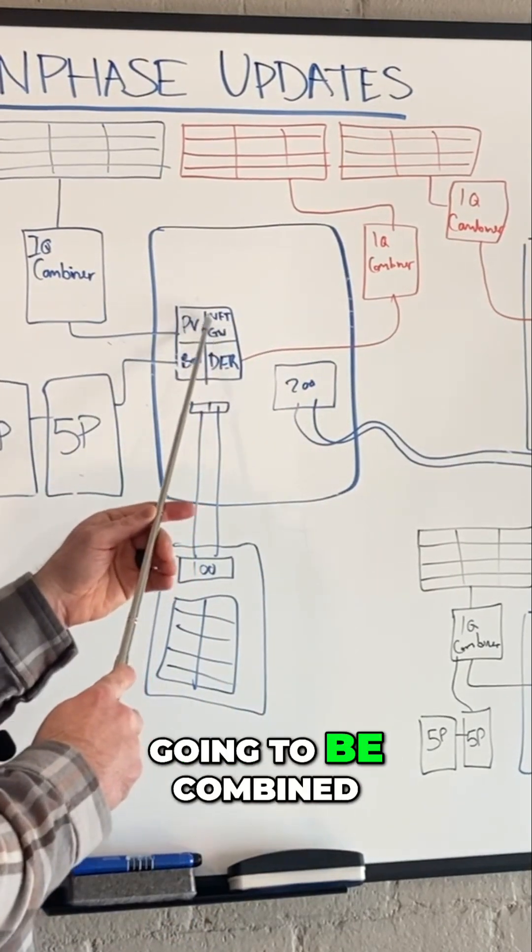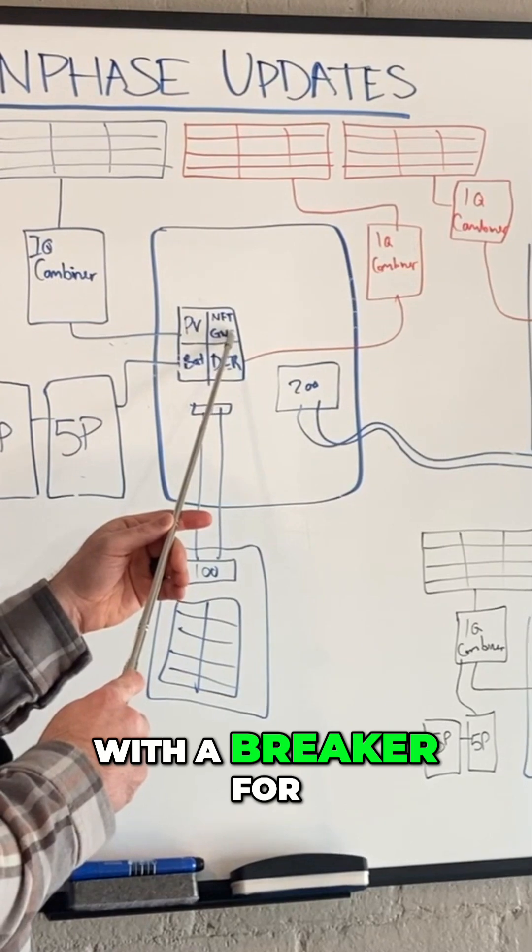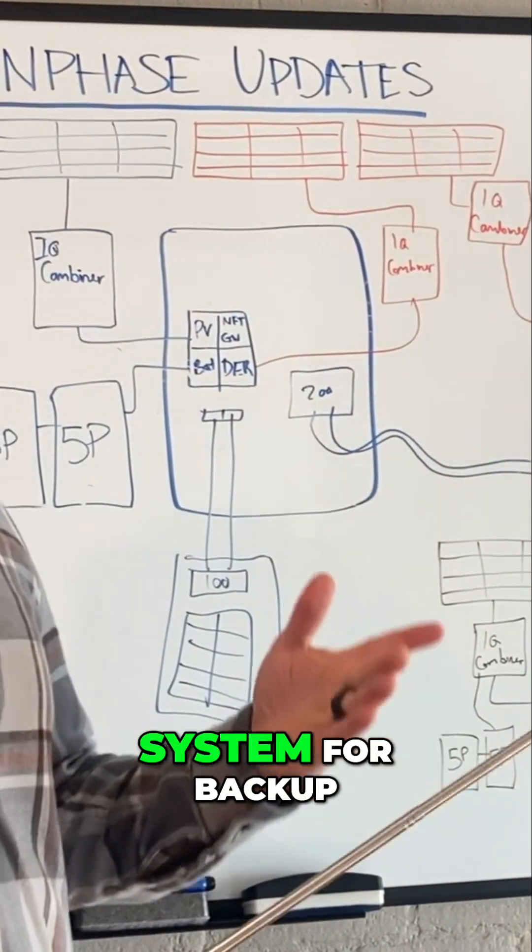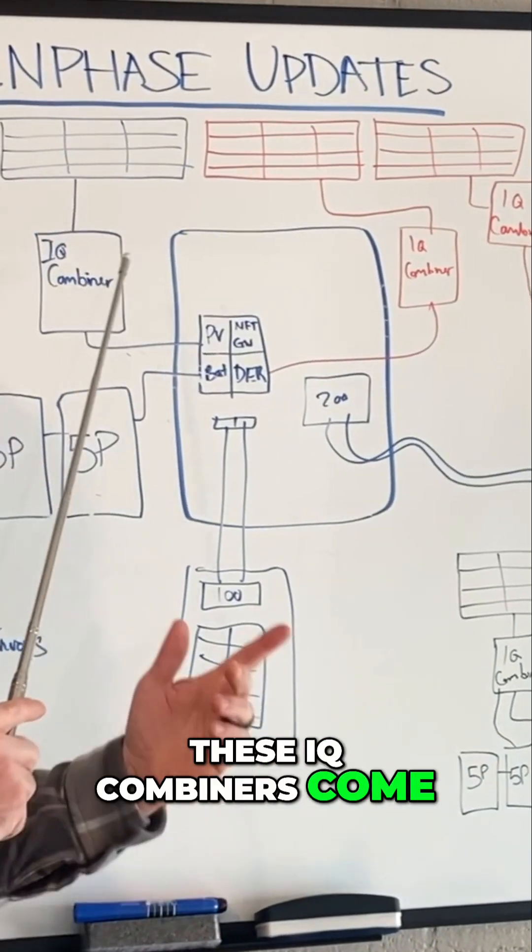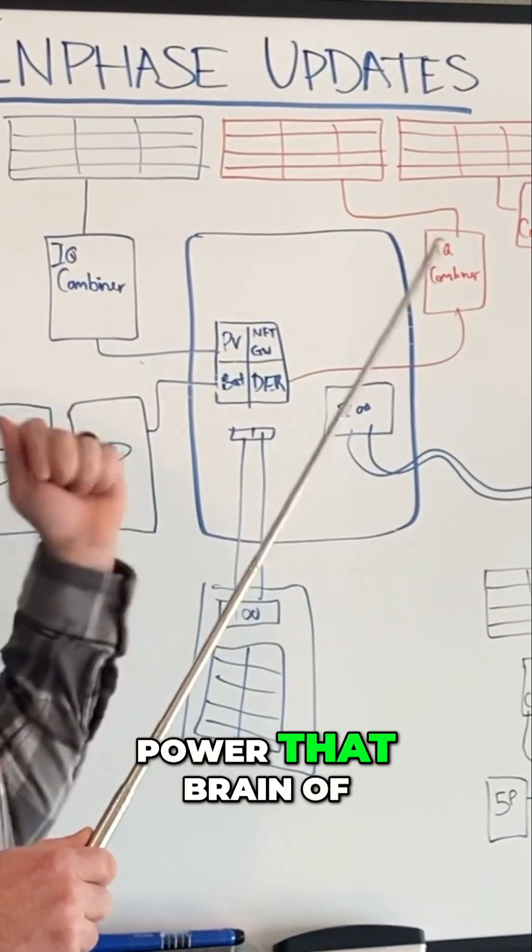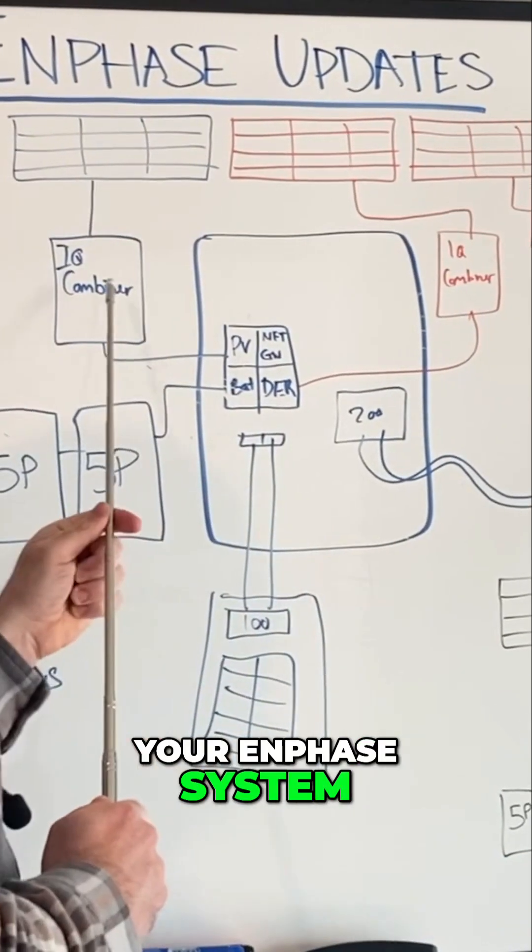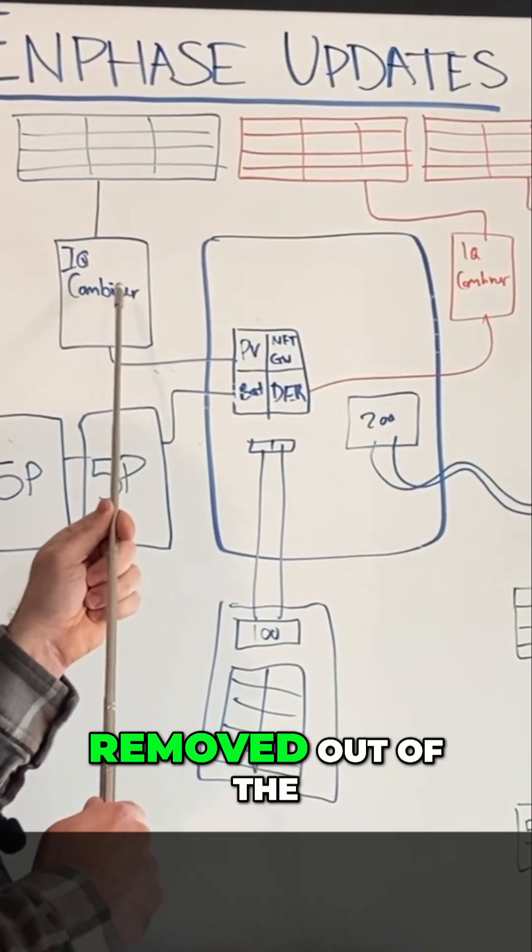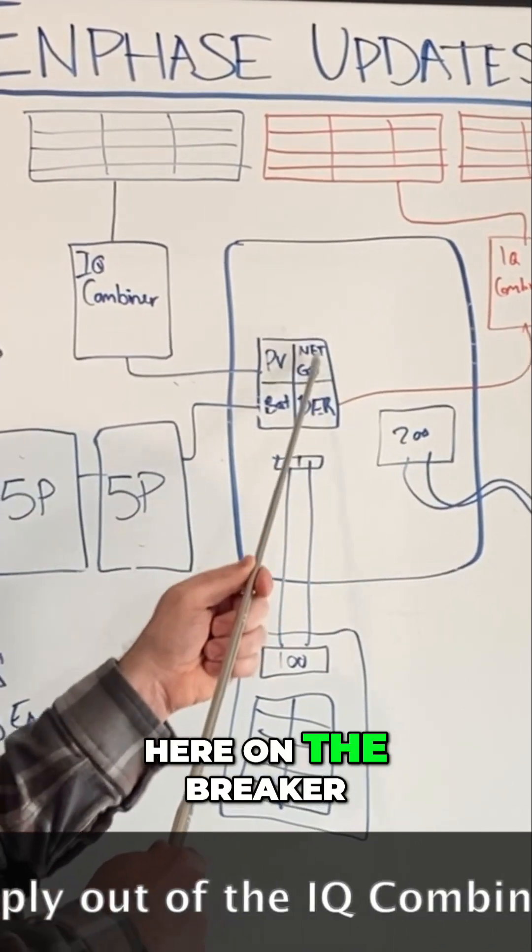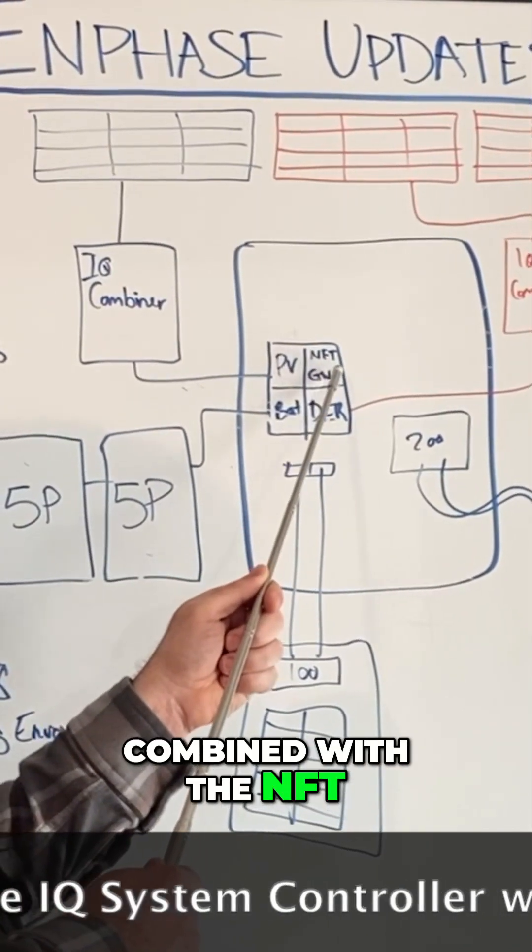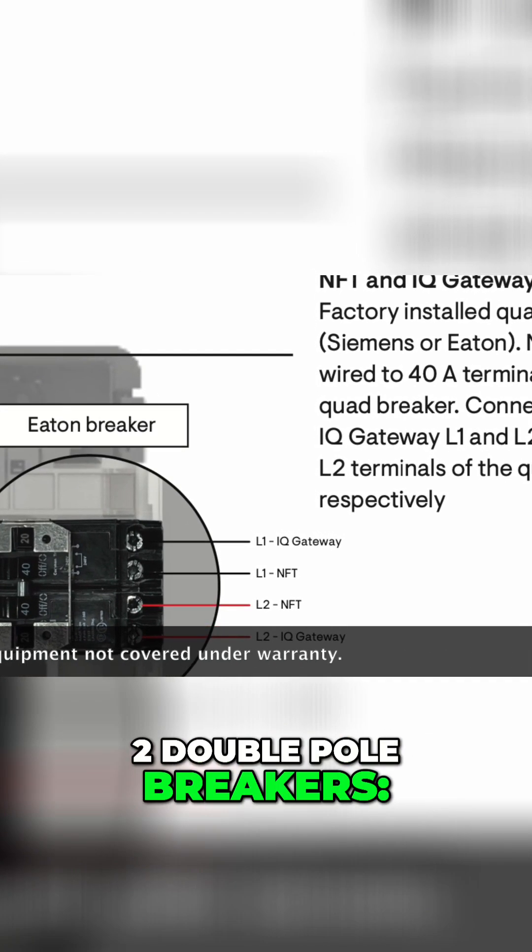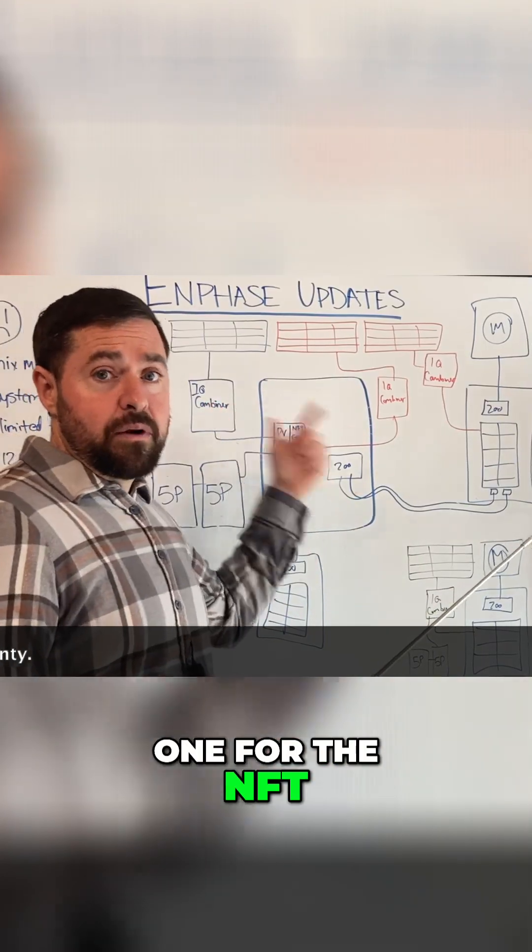That NFT breaker is going to be combined with a breaker for your IQ gateway, which is very important with an Enphase storage system for backup. These IQ combiners come built-in with an IQ gateway breaker to power the brain of your Enphase system. That has to be removed from the IQ combiner and terminated here on the breaker combined with the NFT. That's going to be a quadplex breaker, so it's kind of two double pole breakers—one for the NFT, one for the IQ gateway.